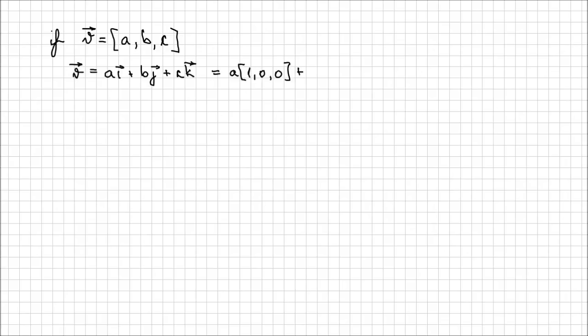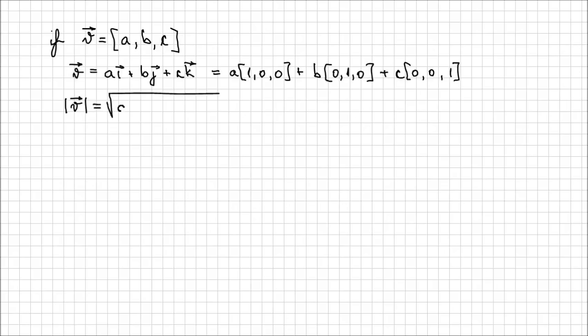Similar to the 2-space, the magnitude of a vector v is going to be the square root of a² + b² + c². I'm not going to demonstrate this because it is really too similar to what I've done in the 2-space. Using the Pythagorean theorem, you can determine this on your own very quickly.